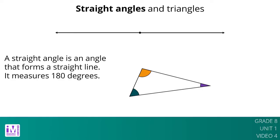For any triangle, if we add the three angles of the triangle physically by cutting them off and lining up the vertices and sides, then the three angles form a straight angle.